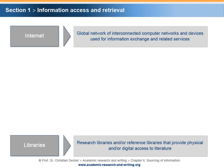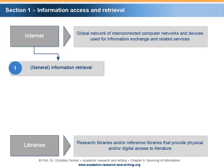Broadly speaking, two manifestations of information access and information retrieval via the Internet can be distinguished. First, the process of general information retrieval might be applied. Web search engines such as Google, Bing, etc. can be used during the search process.